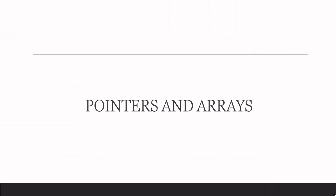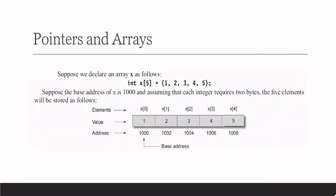Next topic is pointers and arrays. Let us consider an array named x of type integer. So int x[5] means it has 5 elements, declared and initialized with the first 5 numbers: 1, 2, 3, 4, 5.